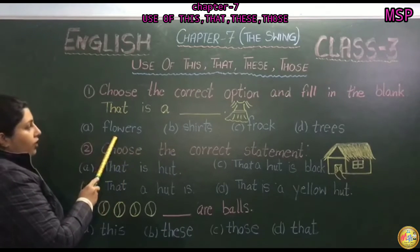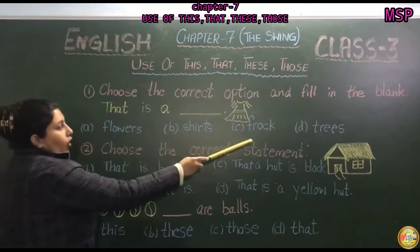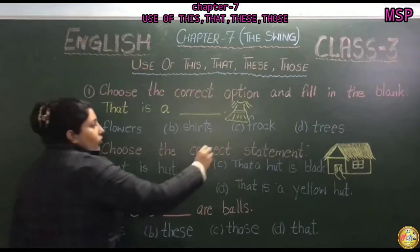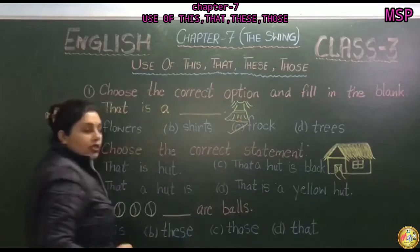Options are flowers, shirts, frock, trees. Better piste thi picture dekh rahe ho, frock thi picture hai. So we will take the option C, frock.